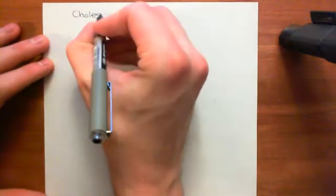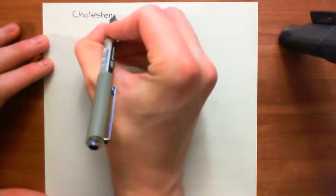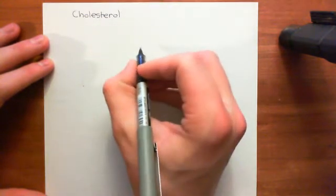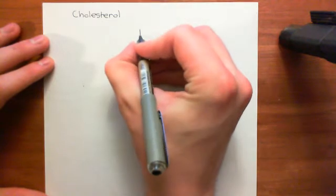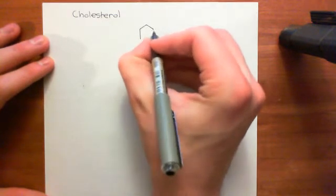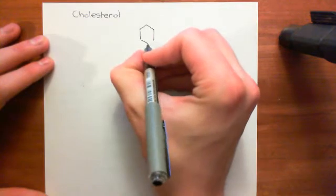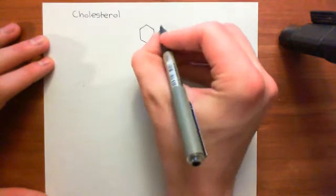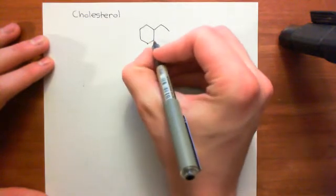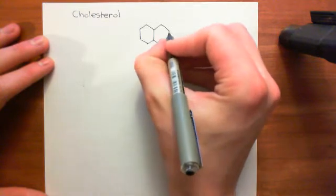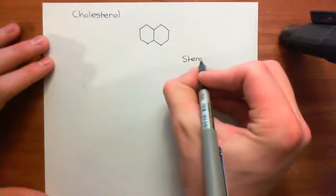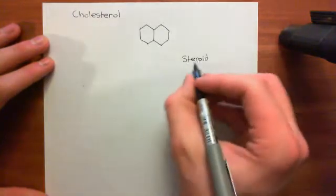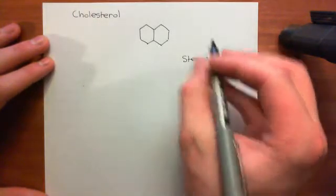Basically, cholesterol is a sterol, and to understand what a sterol is, we need to understand what a steroid is. So we'll start off with what a steroid is. Steroids basically have a structure which contains four carbon rings. This is going to be the steroid structure.